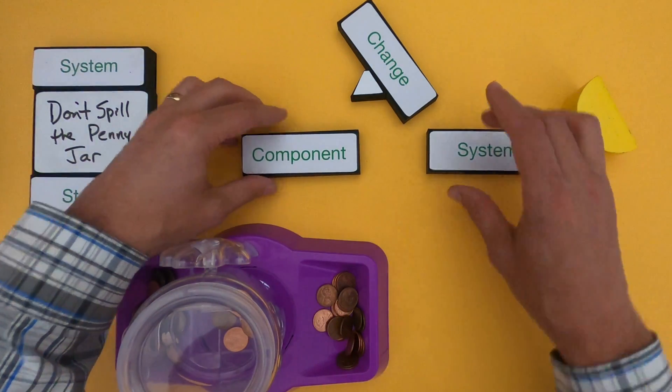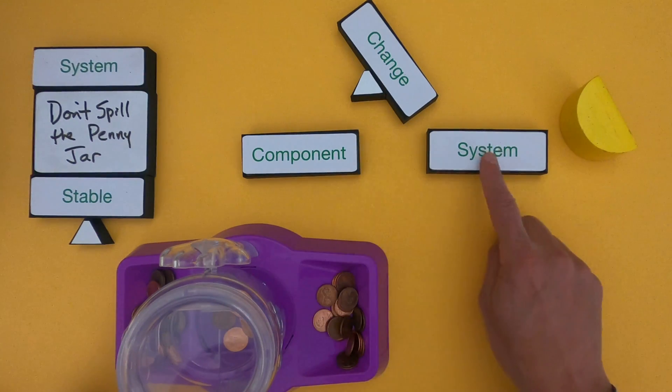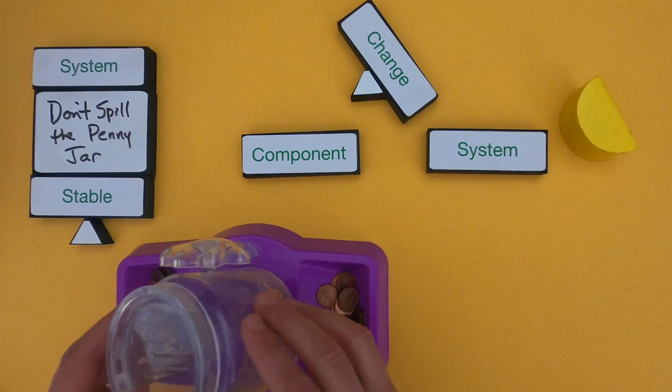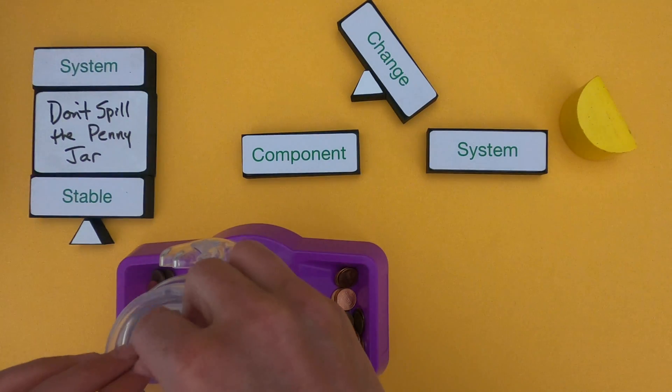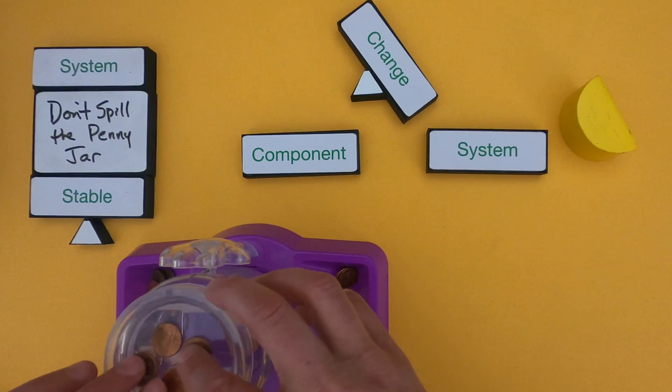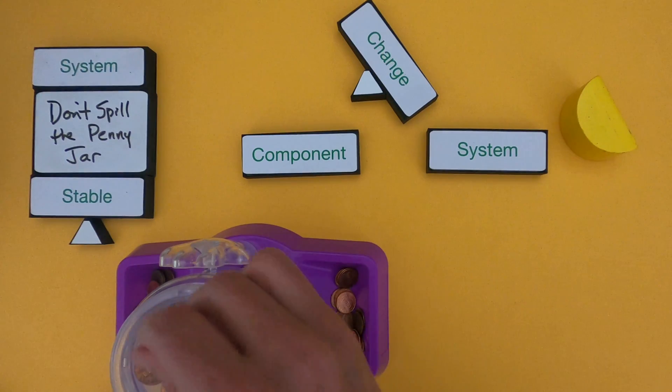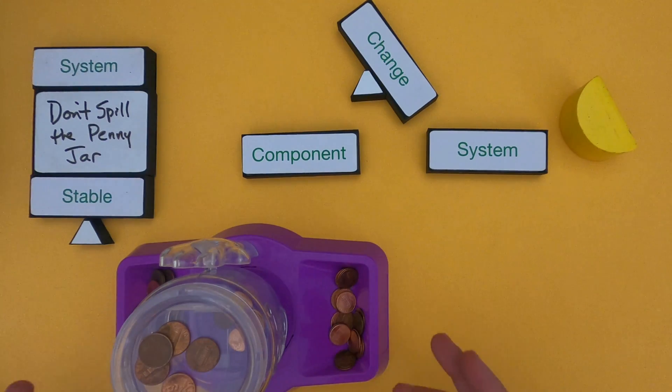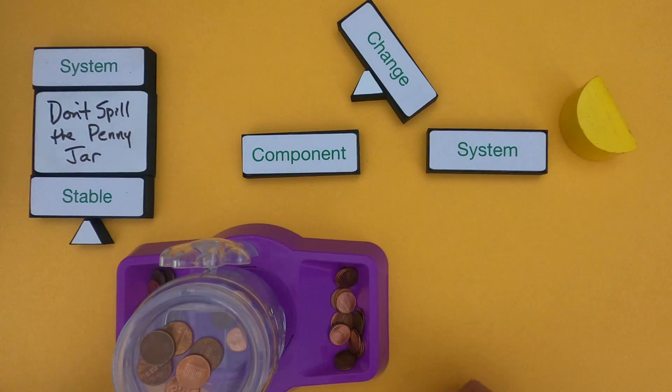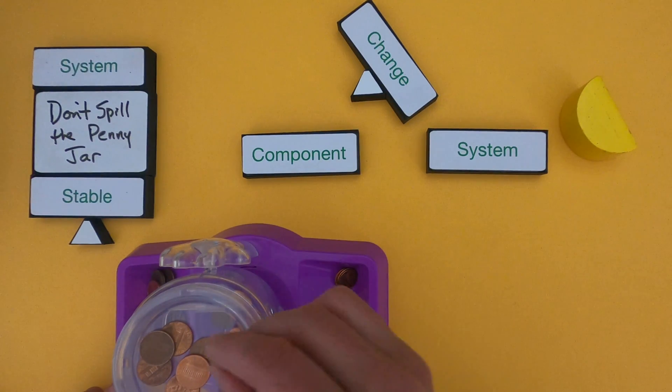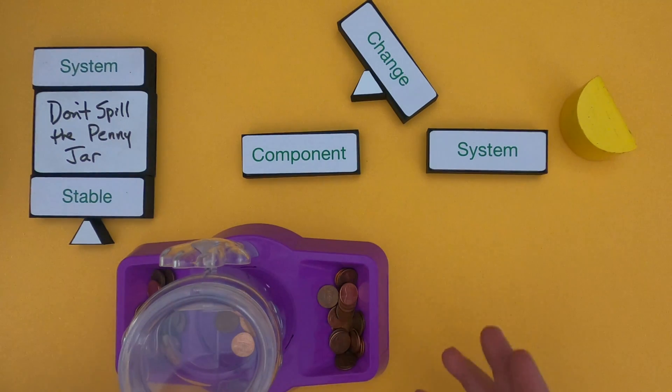We're going to start seeing how changes in the components of this system, small parts of the system, can lead to changes in the entire system. The way it's set up is you start with some pennies - we could start with four pennies. Then you alternate back and forth. This person could put a penny on, and we see there's no change in the system. Then the person on the left could put a penny on - there's not much change. Then we could add a penny on the right, and we can see that the whole system becomes unstable.